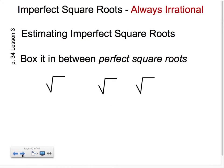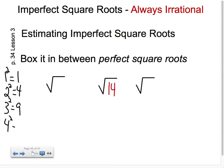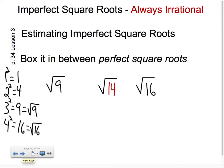Let's look at another one. The perfect square root of 14 does not exist, so it's imperfect. I need to box it in between perfect ones again. Going through it in my mind: 1 squared equals 1, 2 squared equals 4, 3 squared equals 9, 4 squared equals 16. So the square root of 9 is 3 and the square root of 16 is 4 — that boxes it in. Let's go to our number line and see if it makes sense.